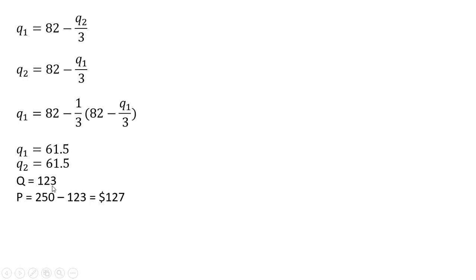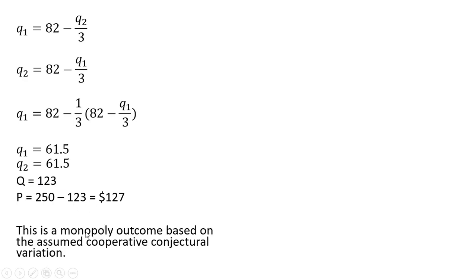The market price, take the inverse demand, 250 minus Q, where Q is 123, we get a market price of $127 per unit. This is a monopoly outcome based on the assumed cooperative conjectural variation.